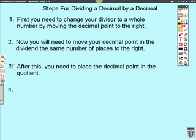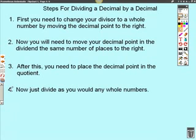After doing this, you need to place a decimal point in the quotient. If you don't go ahead and do this, you might forget to put it in there and it's very important that you move it up. And finally, you just divide as you would any whole numbers.